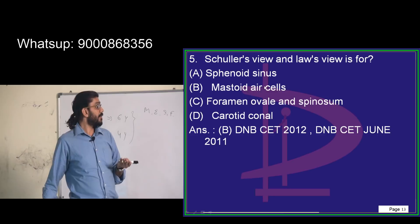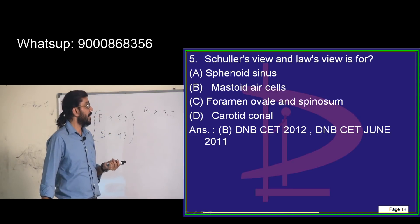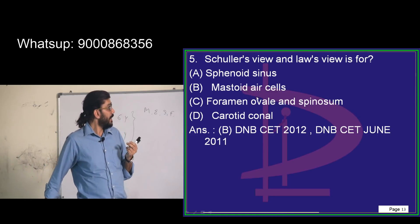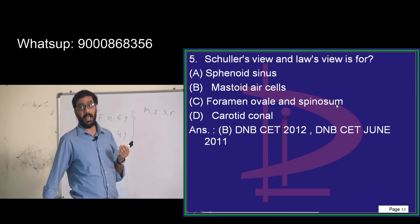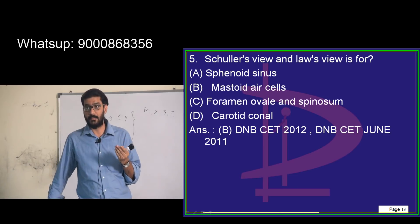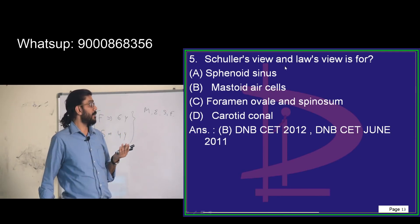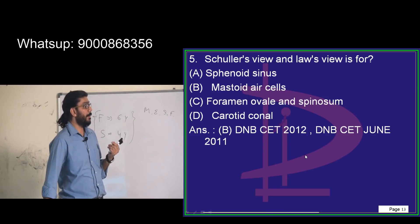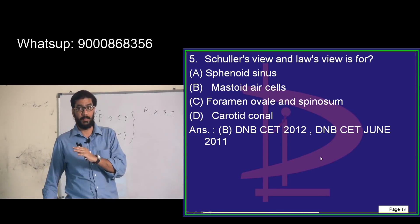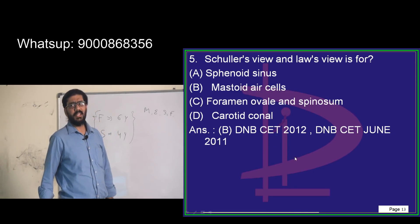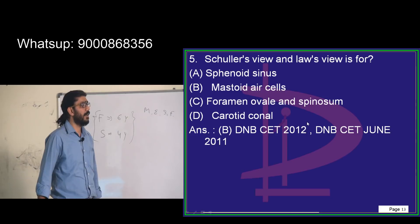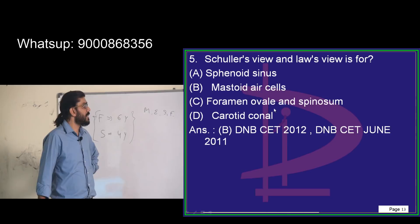Foramen ovale transmits the mandibular division of the trigeminal nerve, the accessory meningeal artery, lesser petrosal nerve, and emissary veins. Foramen spinosum carries the middle meningeal artery. Medial to lateral you have lacerum, ovale, and spinosum. These cannot be seen on a mastoid X-ray. Carotid canal also cannot be seen on X-ray. These structures are properly seen on CT scan rather than plain X-ray.